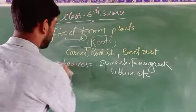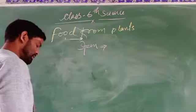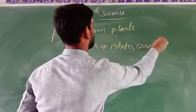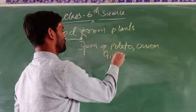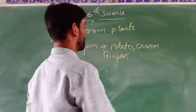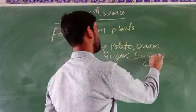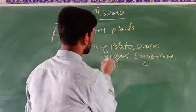Next one is stem. What are the different forms of a stem we can use? We know that very commonly, potato, onion, ginger, and sugarcane are used as stems. These are the different forms which are used as stem in our food.